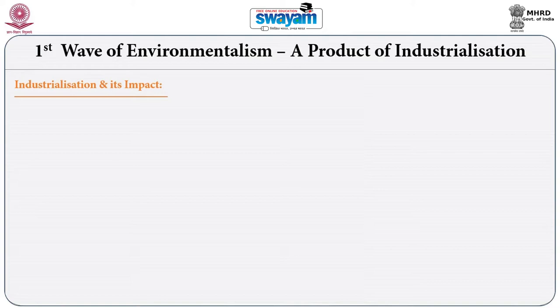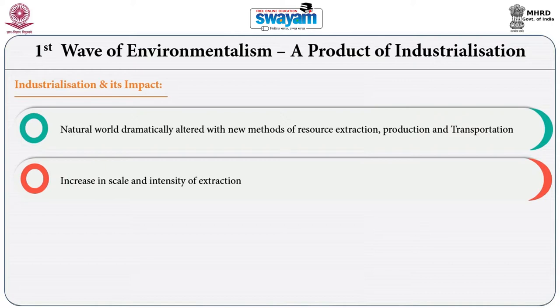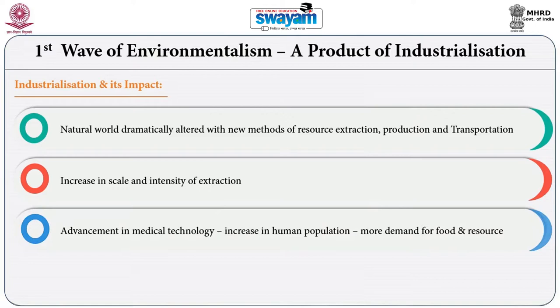With industrial revolution, the natural world was dramatically altered with new methods of resource extraction, production, and transportation. Because of industrial revolution, there was an increase in scale and intensity of resource extraction, and advancement in medical technology resulted in an increase in human population. Increasing human population meant increasing demand for food and resources, which led to greater production, and greater production led to greater industrial waste. Industrial revolution thus brought forward a completely new kind of social structure with a different kind of impact on nature.